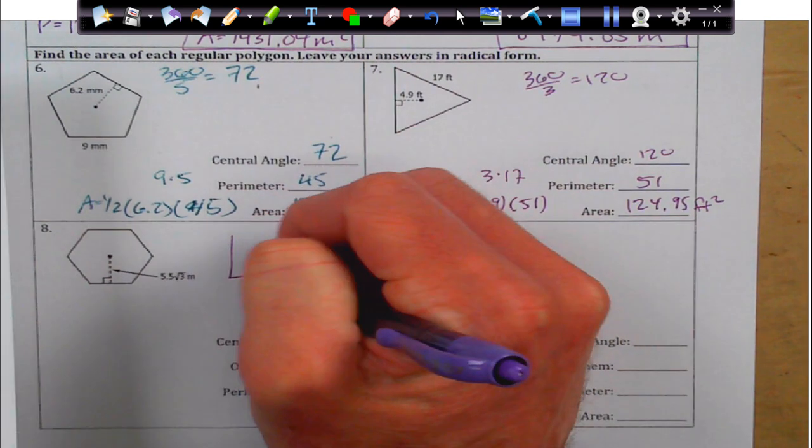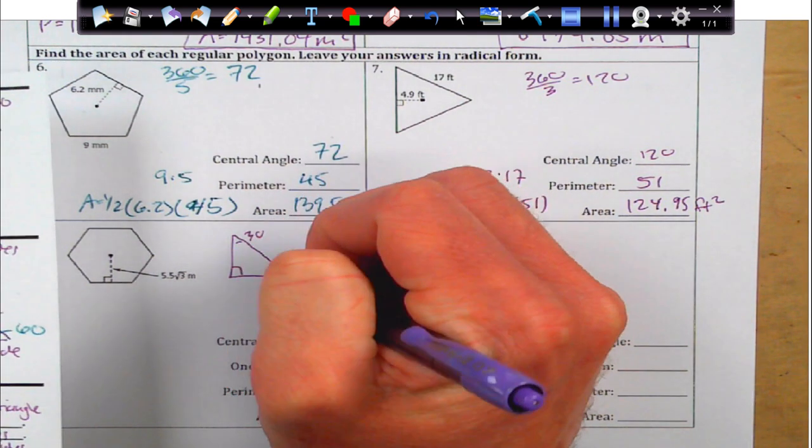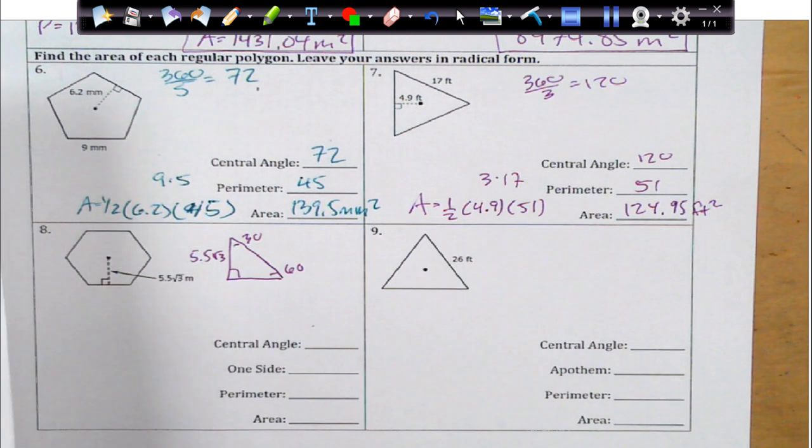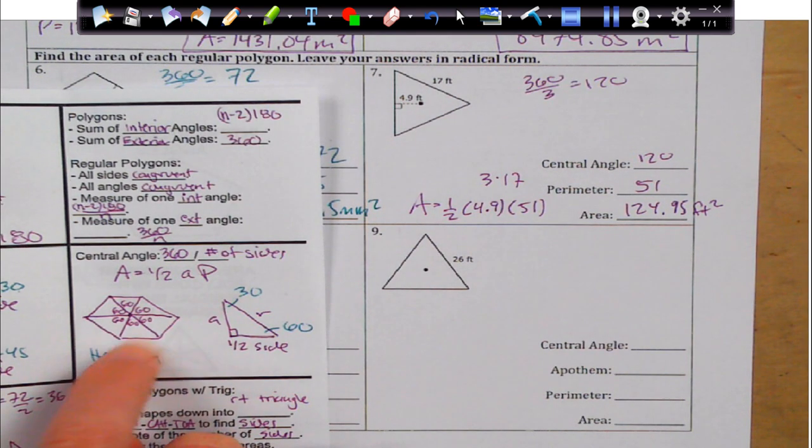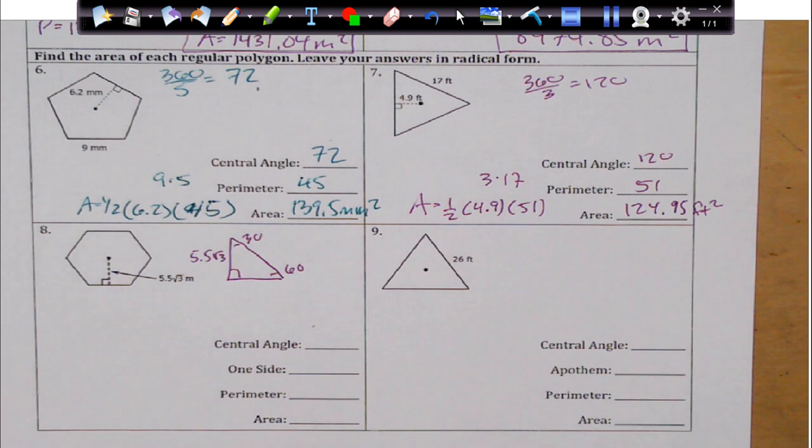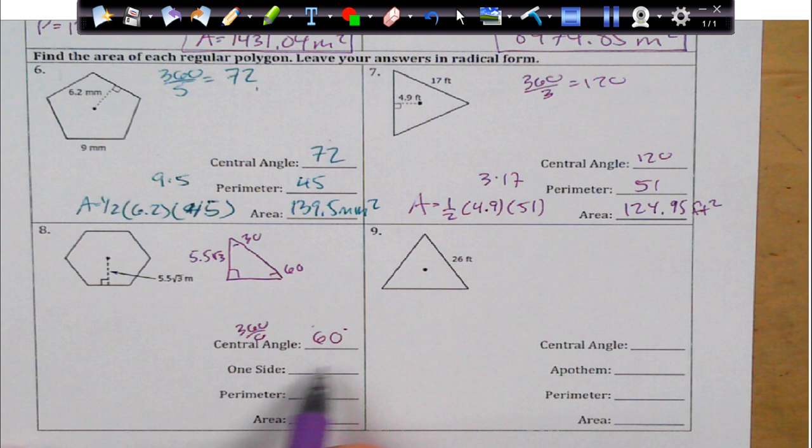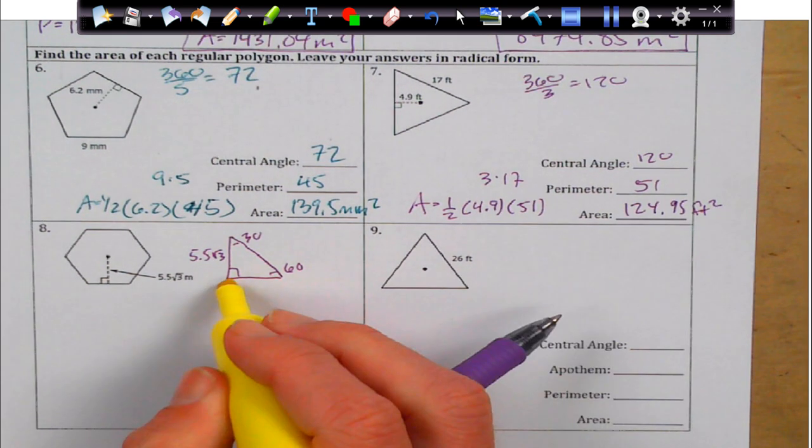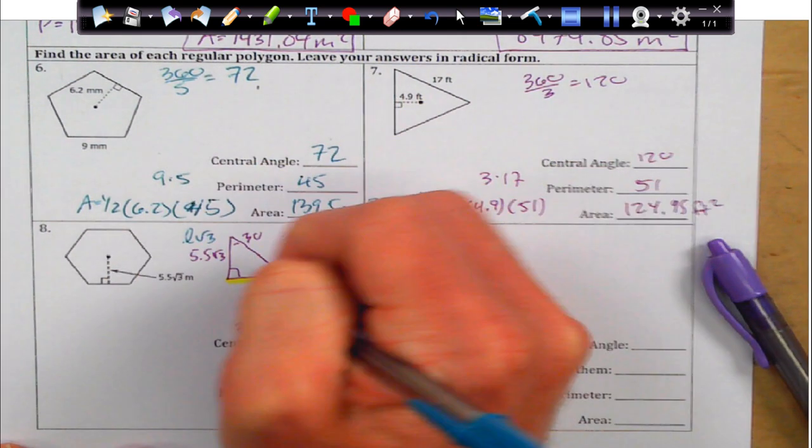So, I'm going to go ahead and draw that little piece out. I know it's 30 and 60, and they give me 5.5 rad 3, which is lovely. So, I have my apothem. My central angle, we can see right here, is 60 degrees for every hexagon. So, that's just 360 divided by 6. So, I'm going to get 60 degrees. My one side, so I really want to solve for this one side. And how I can do that is by using my special right triangles.